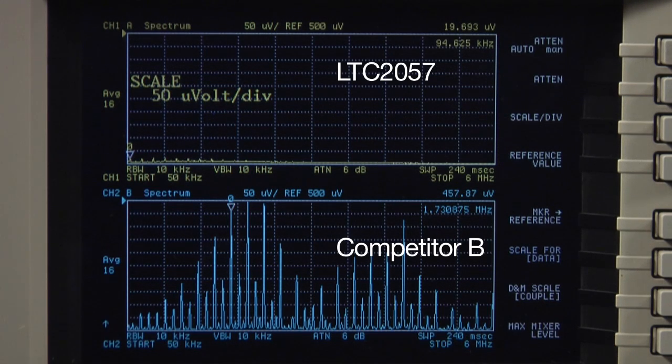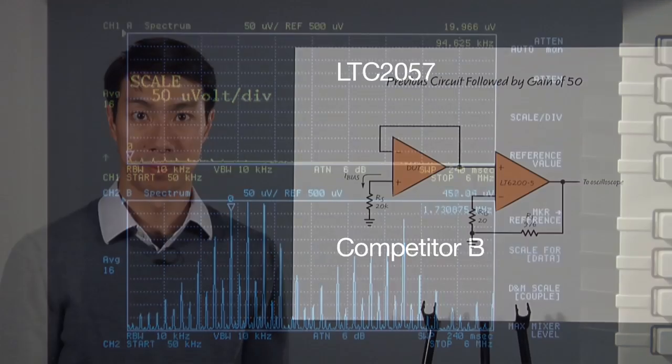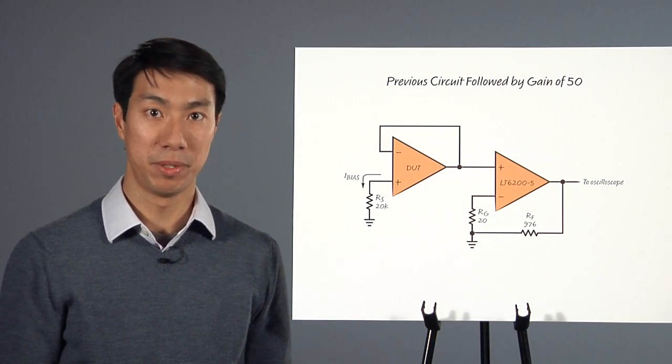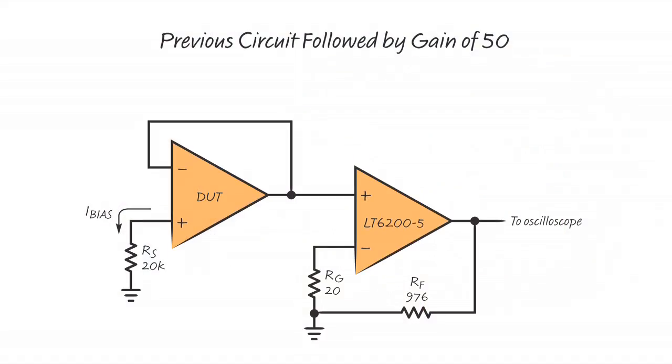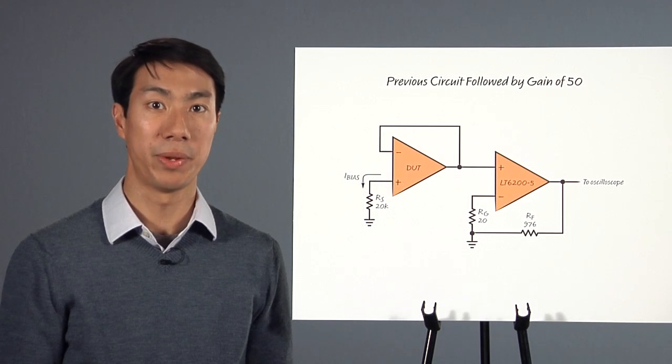For a more direct illustration of what this means, let's examine this circuit in the time domain. In this setup, I have simply taken the previous circuit and followed it with a low noise gain of 50, so that the DUT's signal is big enough to see on a scope. Let's see what we get now.